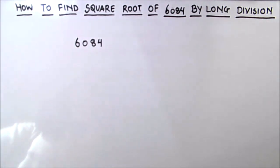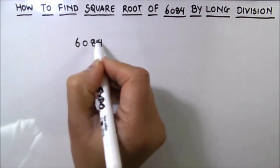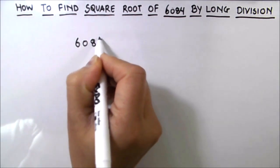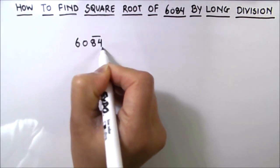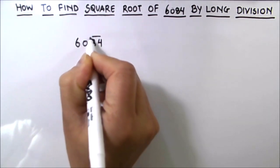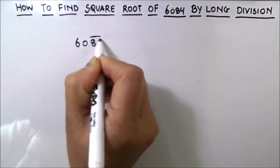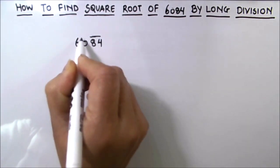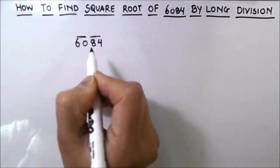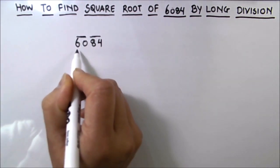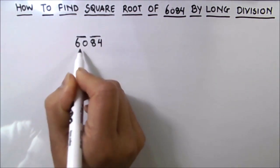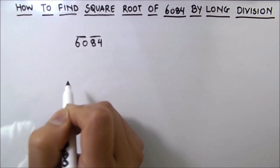So the first step in finding the square root using long division method is to group the numbers or group the digits in pairs starting from the units digit. We have our units digit as 4. So we are going to group the digits from 4, 8 and 0, 6. So the two pairs starting from the left are 6, 0 is one pair and 8, 4 is the other pair.